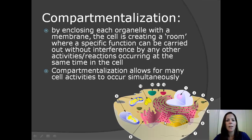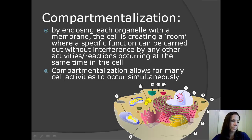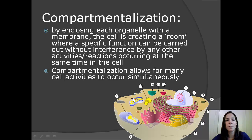Compartmentalization allows for many cell activities to occur simultaneously. Some examples of cell activities would be the synthesis of protein at the ribosomes — the ribosomes are the little dots here on the rough ER that create proteins. Another activity would be replicating or making copies of DNA in the nucleus, and another would be creating energy at the mitochondria through cellular respiration. Today, we're going to be focusing on the activities of the secretory pathway as well as intracellular digestion.